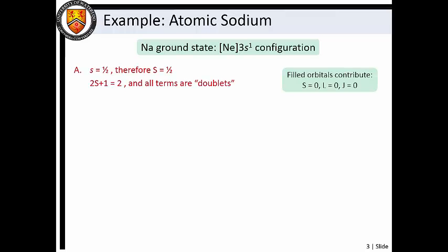Since we are only concerned with the valence 3s electron, which has a spin angular momentum quantum number of 1 half, the system is described by a total spin angular momentum quantum number of 1 half. Thus, the spin multiplicity is equal to 2, and the terms are referred to as doublets.